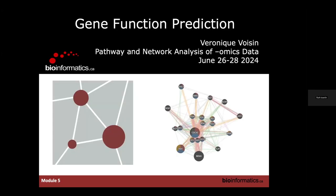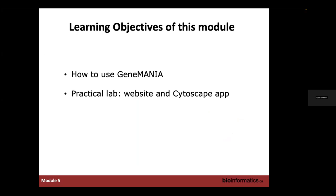This lecture is going to talk about gene function prediction, specifically demonstrating how we can use GeneMANIA for gene function prediction. At the end of this module, after you finish the lab, you will understand what GeneMANIA is, what it contains, and what it does. You'll get a chance in the practical lab to use both the GeneMANIA website and the GeneMANIA Cytoscape app. GeneMANIA started as a web app and progressed into a Cytoscape app, and today you'll see how we can use both.